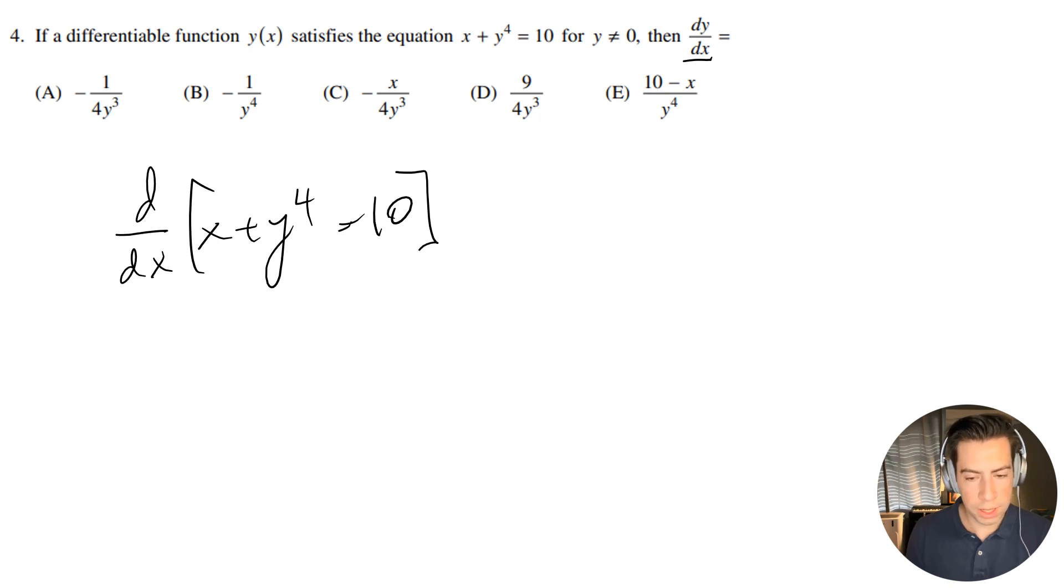Let's see what we get. Okay, so d/dx of x is going to be 1, plus 4y^3 dy/dx, and that's going to equal zero because it's just a constant.